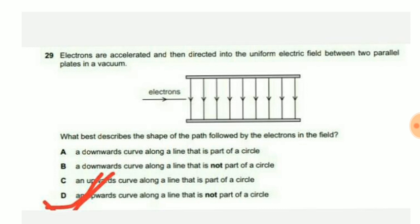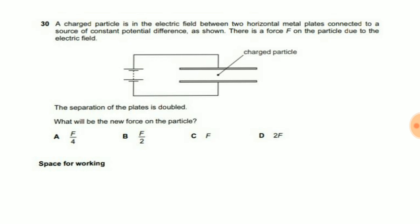Now let us see question number 30. A charged particle is shown by the dot mark and the two plates are there. The two plates are supplied with a battery.